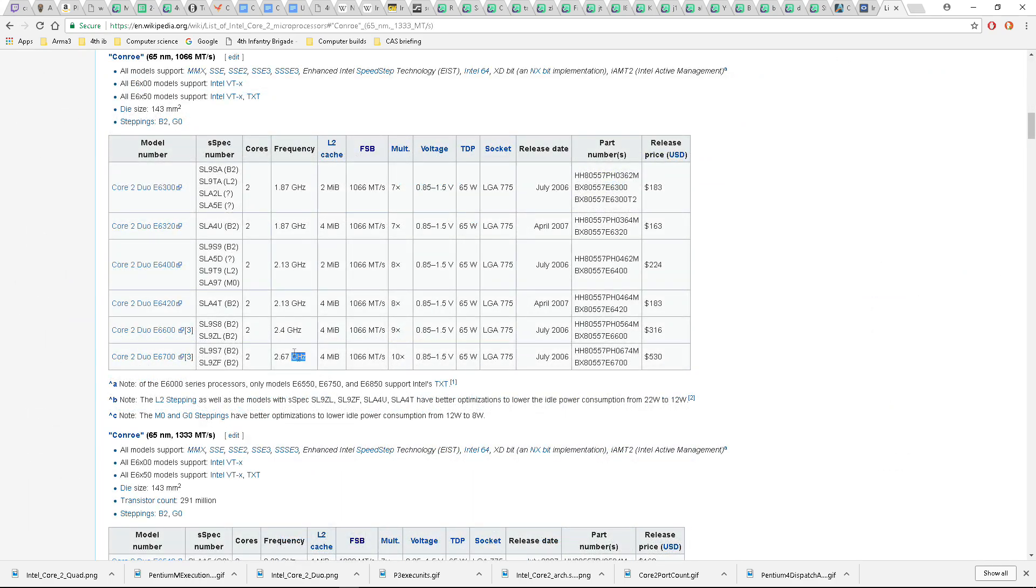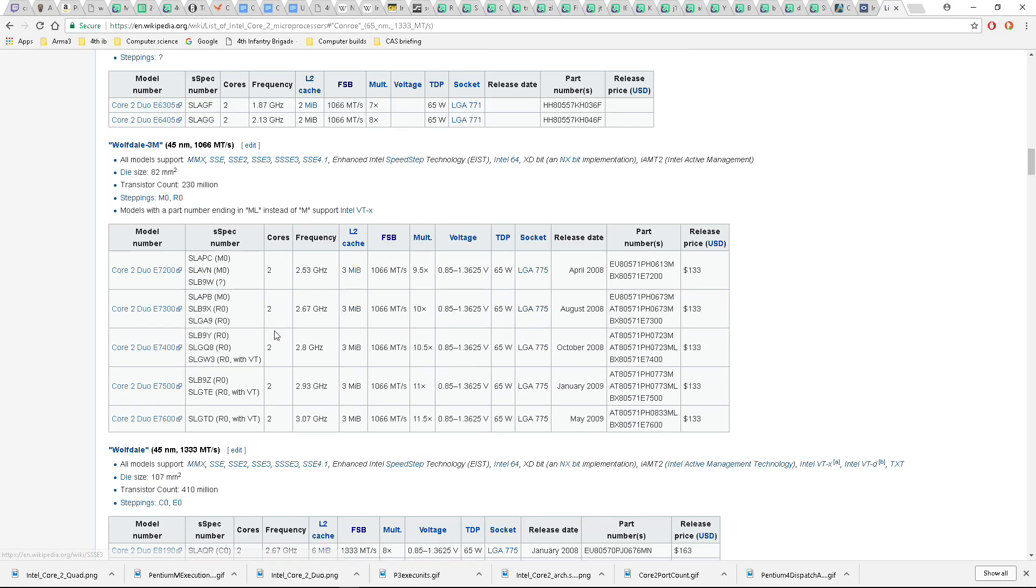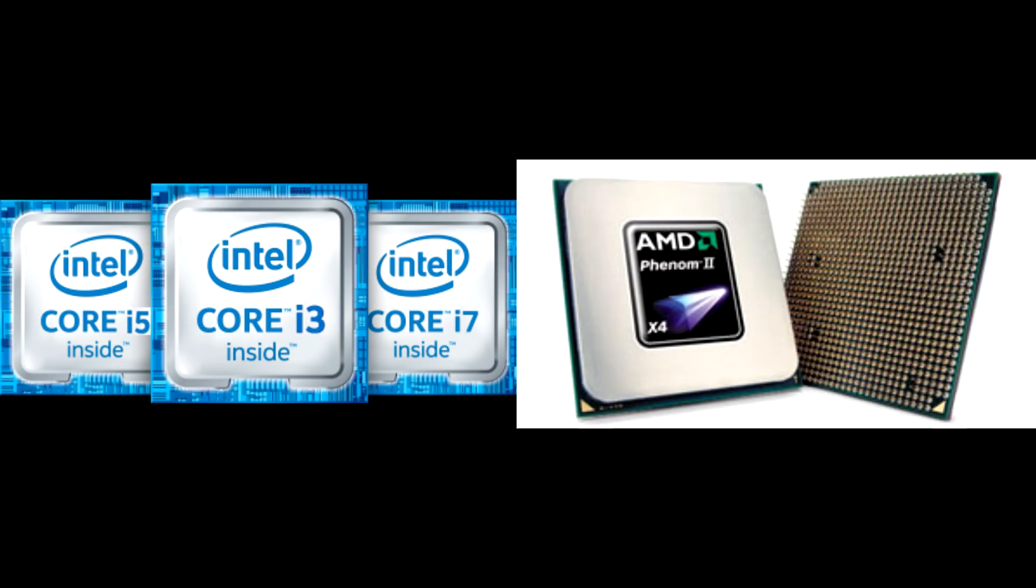This did come at a cost. Frequencies dropped dramatically. Instead of having a CPU run at 3.8GHz, you now expected your CPU to run at 2.5GHz, even if the 2.5GHz CPU was faster. This officially marked the end of the GHz war, and the beginning of the IPC war, which would continue in for much longer.